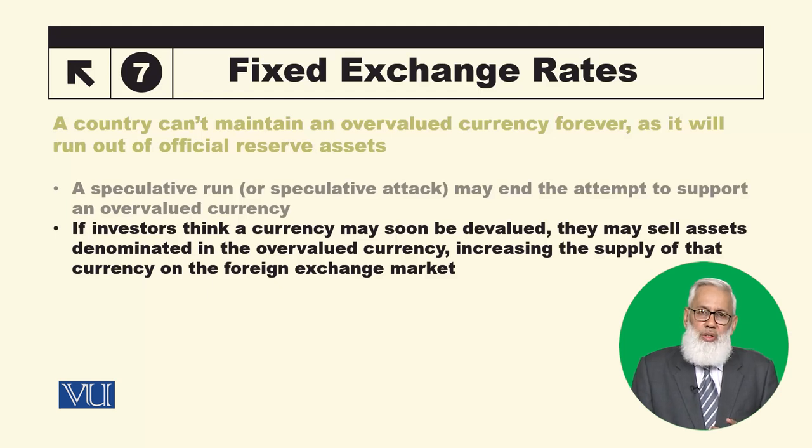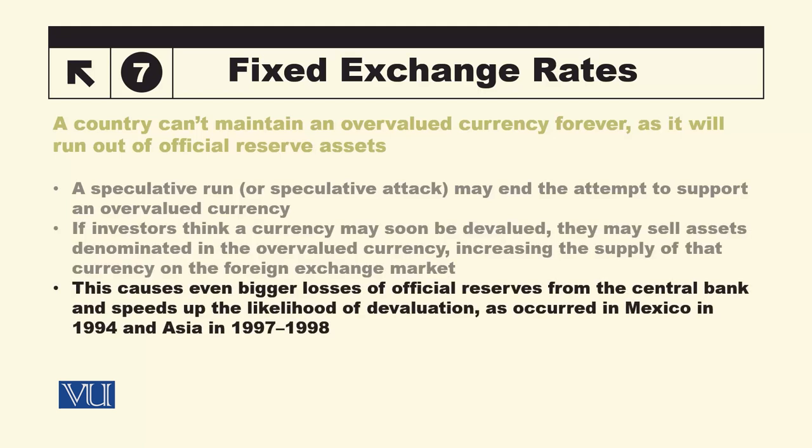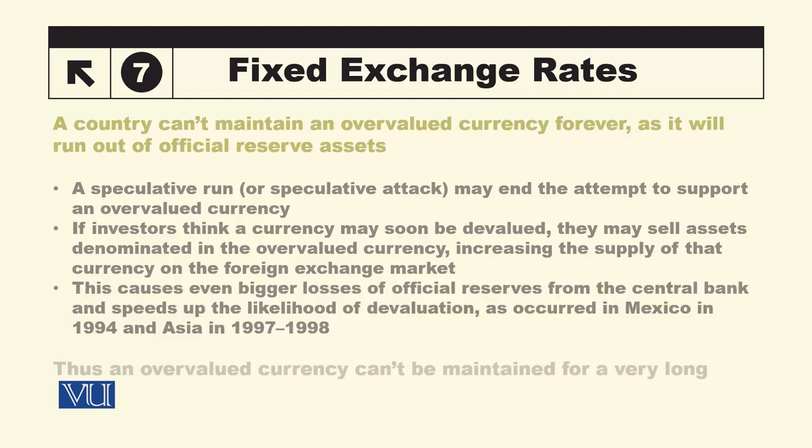Selling assets denominated in the overvalued currency increases the supply of that currency in the foreign exchange market, causing even bigger losses of official reserves from the central bank and speeding up the likelihood of devaluation. This has occurred in Mexico in 1994 and in Asian economies in 1997 and 1998. An overvalued currency simply cannot be maintained for a very long period.